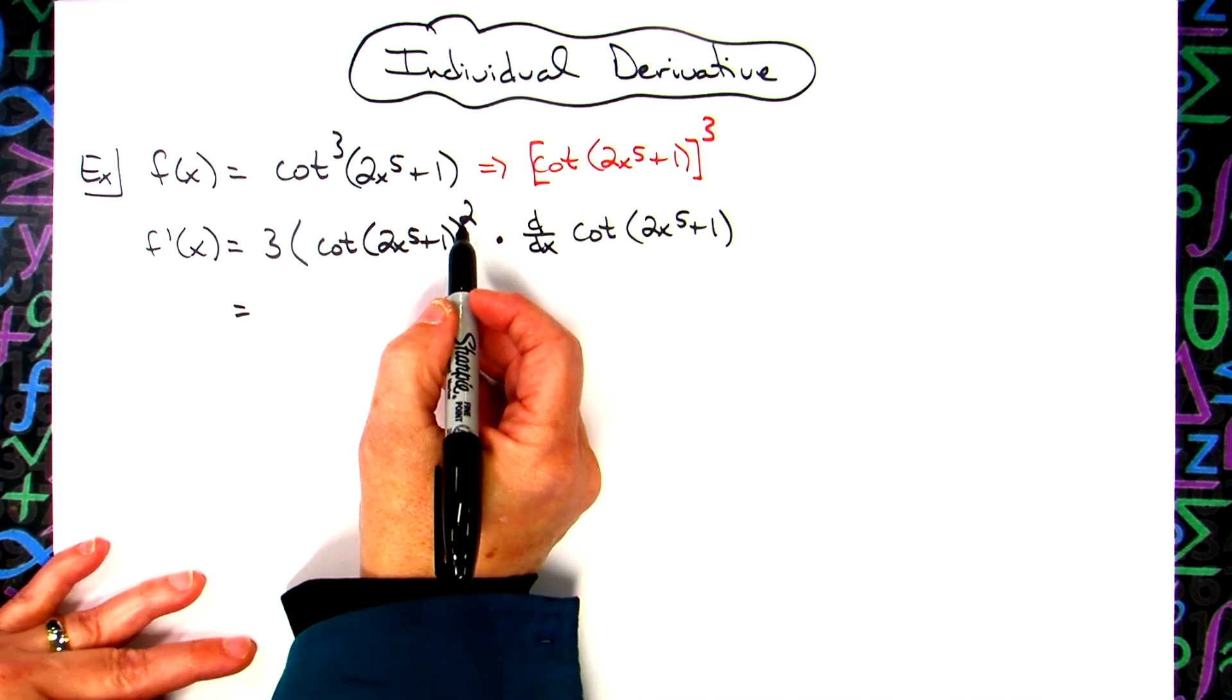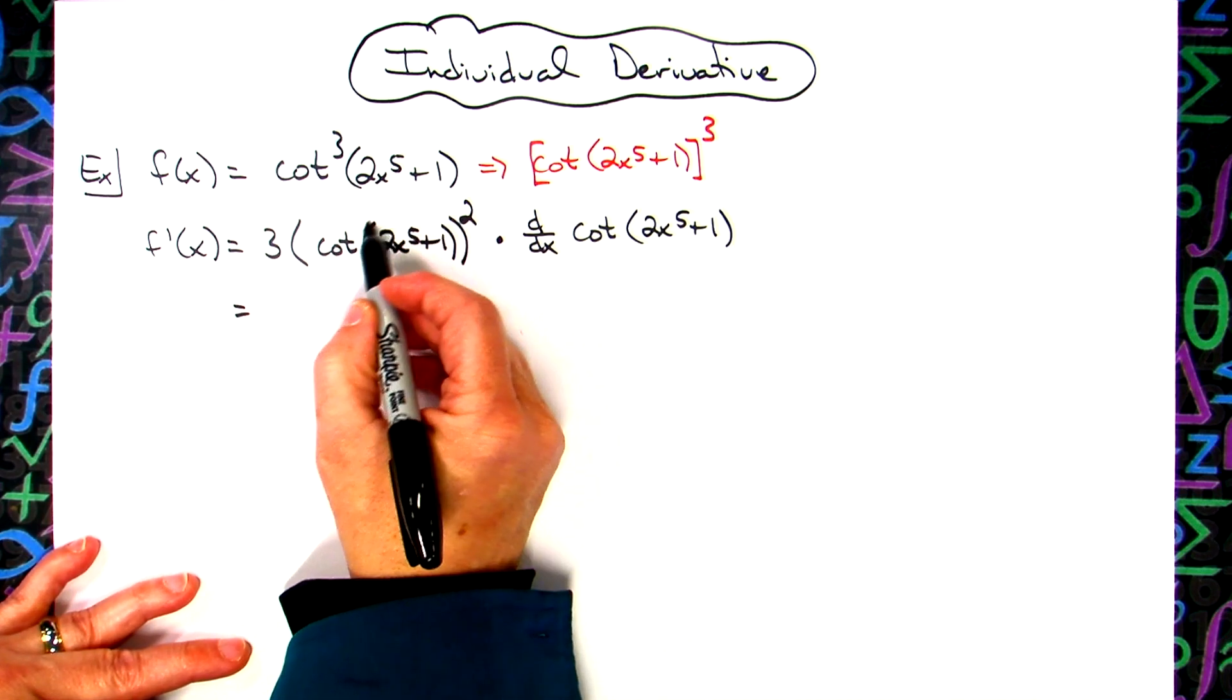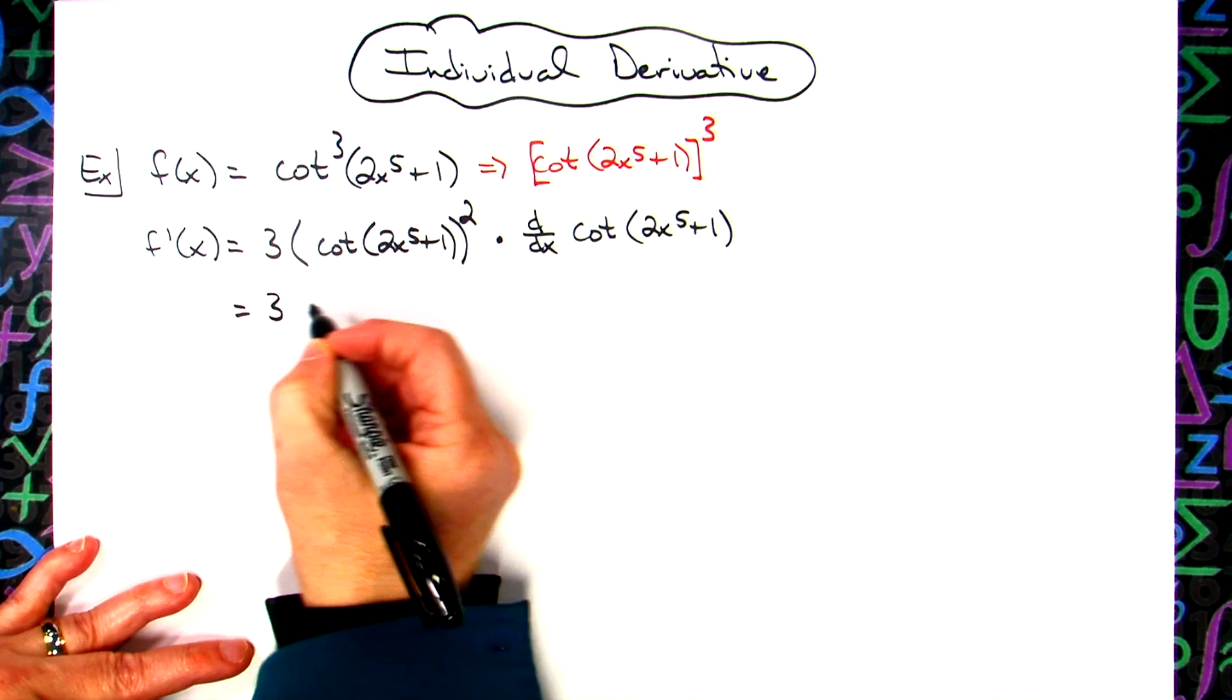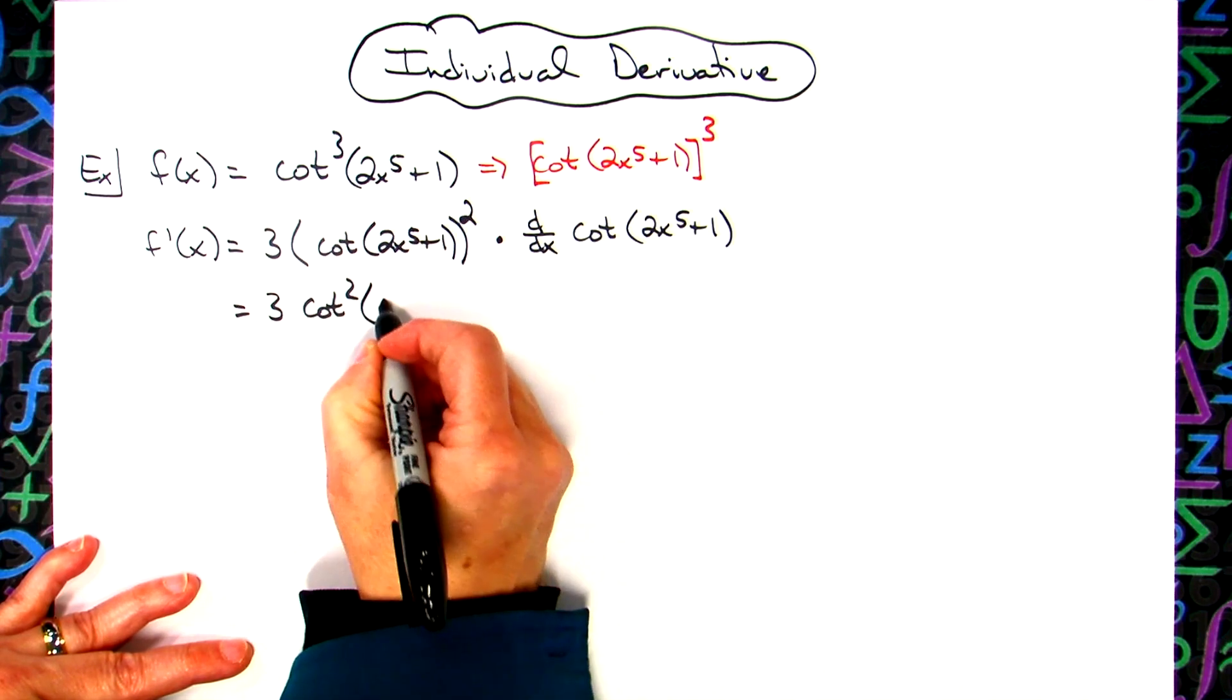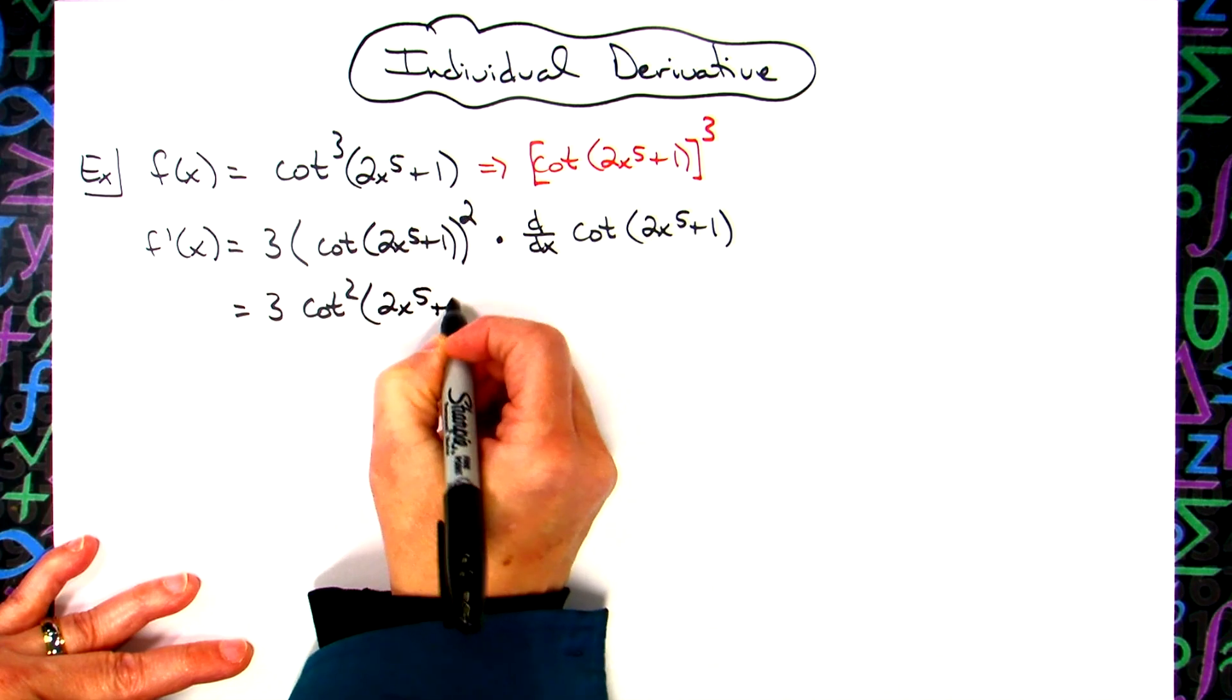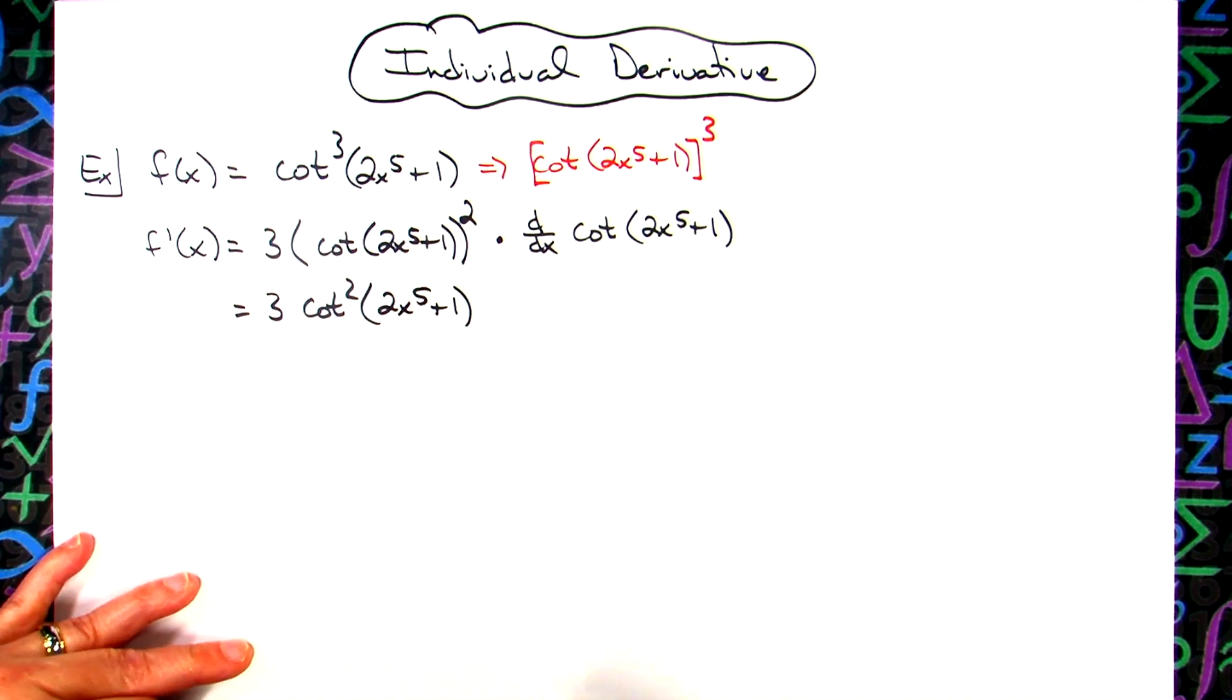At this point, I think I'm going to go ahead and pull that back in, just to get rid of some of those parentheses. So we'll rewrite here as three cotangent squared, that'll be 2x to the fifth plus one, just gets rid of some of those parentheses.